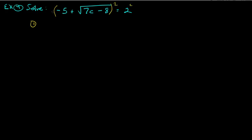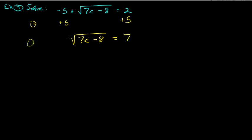Step one: isolate the square root. Add 5 to both sides, giving the square root of (7c minus 8) equals 7. Now we've isolated the square root. Step two: square both sides to undo the square root. You get 7c minus 8 equals 7 squared, which is 49.